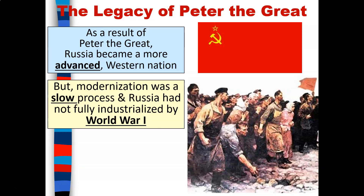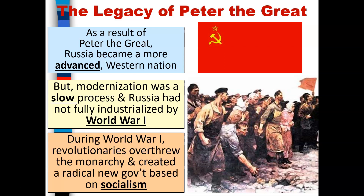As a result of Peter the Great, Russia became more advanced and many ideas from Western European nations were successfully adopted. However, modernization was a slow process and Russia had not fully industrialized by World War One. During World War One, revolutionaries were able to overthrow the monarchy and created a radical new government based on socialism.